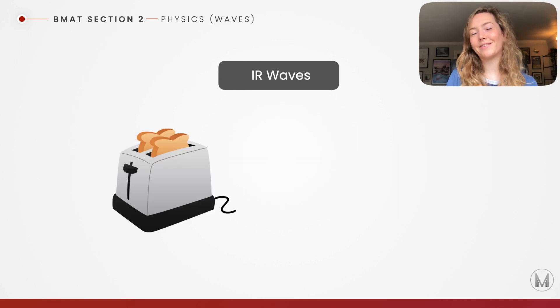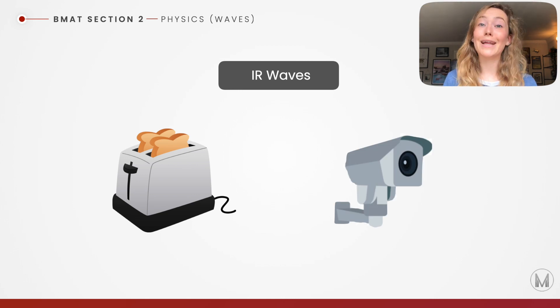Infrared waves are next along our electromagnetic spectrum. We can see here that they are used in toasters, for example, and also in night vision goggles. They can also be used for technology in computers and home security.